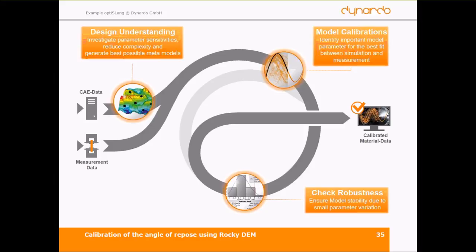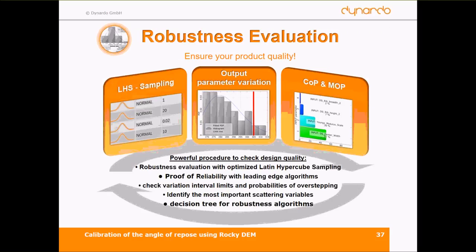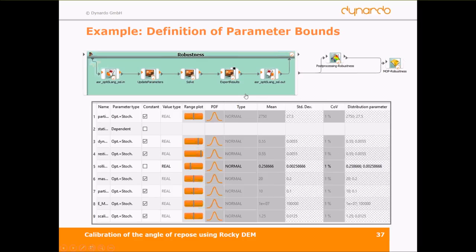We will check if the model is stable due to small parameter variations, which is quite important to increase knowledge about your system. We do again a design of experiment with the optimized parameter set and Latin hypercube sampling. Then we check how big the output parameter variation is and get an idea of whether we have found a stable calibration point.